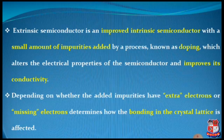The impurities which we have already added in the intrinsic semiconductor will alter the electrical properties of the semiconductor and improve its conductivity. Remember, the impurities which we are adding may have extra electrons or they may have some excess holes. Depending on whether the added impurities have extra electrons or missing electrons — that is, holes — determines how the bonding in the crystal lattice is affected, and this is how the impurity affects the conductivity of the semiconductor.